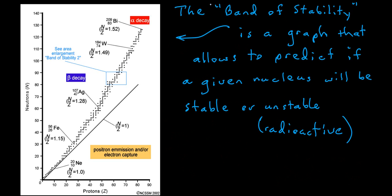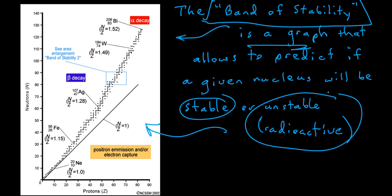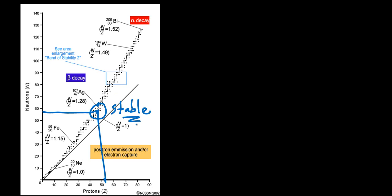Something we'll use in this lab is a chart known as the band of stability. The band of stability is a graph that lets us predict whether a particular nucleus will be stable (non-radioactive) or unstable (radioactive). This region of the graph is where, if we plot the number of neutrons for a nucleus versus the number of protons, it identifies a nucleus as stable. If a nucleus's neutron and proton count plots within this region, that nucleus is stable or non-radioactive.